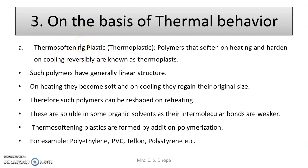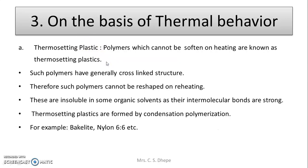Next is thermosetting plastic. The name itself indicates — 'set' means once it is set, when you heat it, it is not going to remain soft. That is why it is called thermosetting plastic. Polymers which cannot be softened on heating are known as thermosetting polymers or thermosetting plastics. Such polymers generally have a cross-link structure.